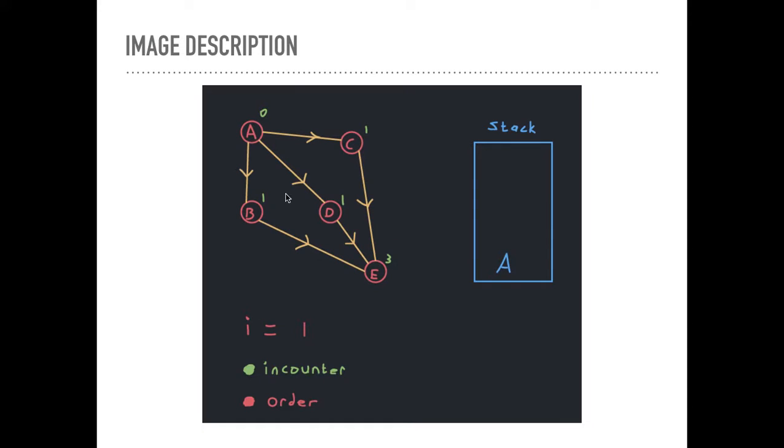For each vertex U of G, so that's every vertex, inCounter of U equals the in-degree of U. So green is inCounter. What's the in-degree of A? There's no incoming edges. So 0.